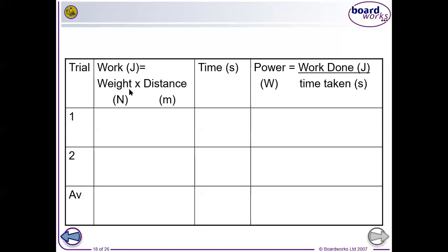Your weight is your mass from the bathroom scales times 9.8; multiplied by the height of the stairs (the displacement), that gives your work done. Time how long it takes to run up the stairs, then divide work done by time to find your power. If you do this two or three times you can then work out your average power.